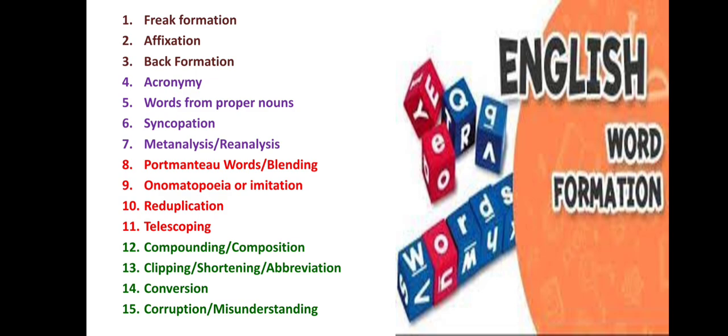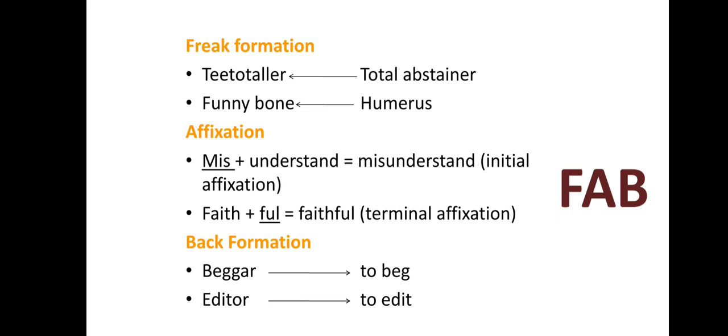What is Freak Formation? Under this process come the words that were coined accidentally — accidentally formed words. In the Freak Formation stage, for example, the word 'T-totaller' is said to have originated from a stammering advocate attempting to pronounce the term 'total abstainer.' The stammering advocate accidentally produced 'T-totaller.' So accidentally formed words belong to Freak Formation.